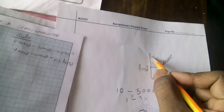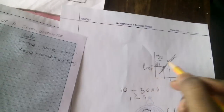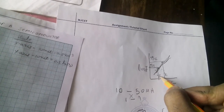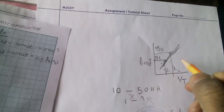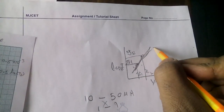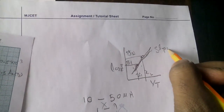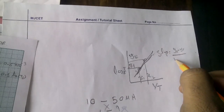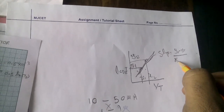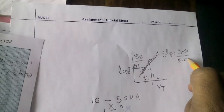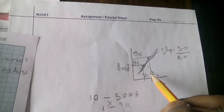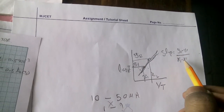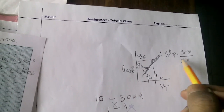Consider these as y2, y1 and x2, x1 to find the slope. The slope is equal to (y2 − y1) / (x2 − x1). Read x2, x1 and y2, y1 carefully from the graph to get the slope value.